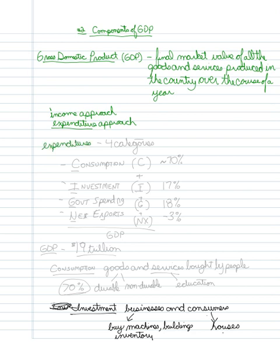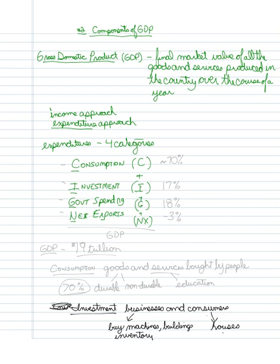In the expenditure approach, we basically have four categories: consumption (C), investment (I), government spending (G), and net exports (NX). So the formula is C plus I plus G plus NX, and adding up these four things gives us our GDP.